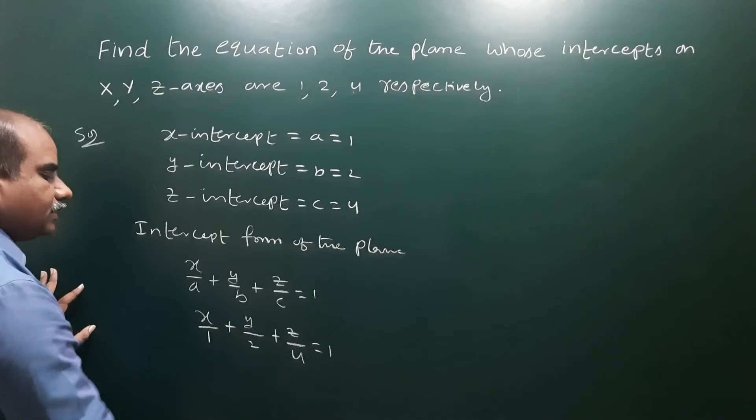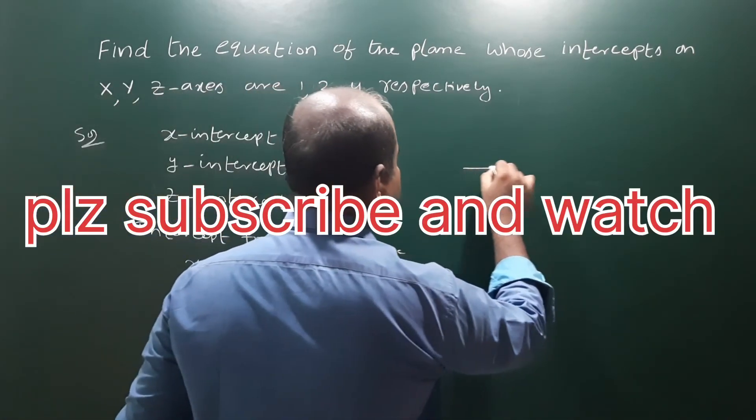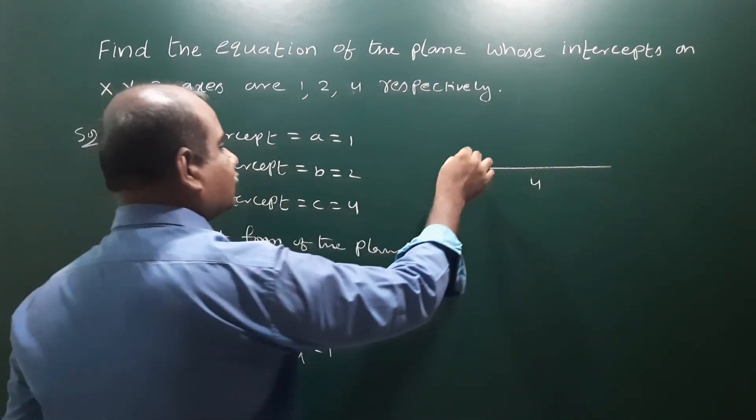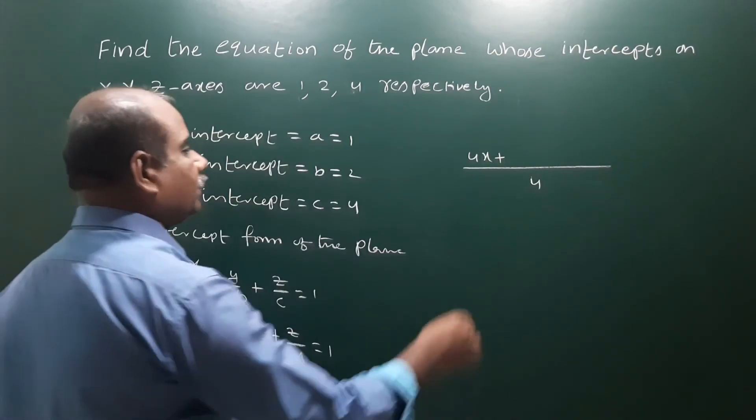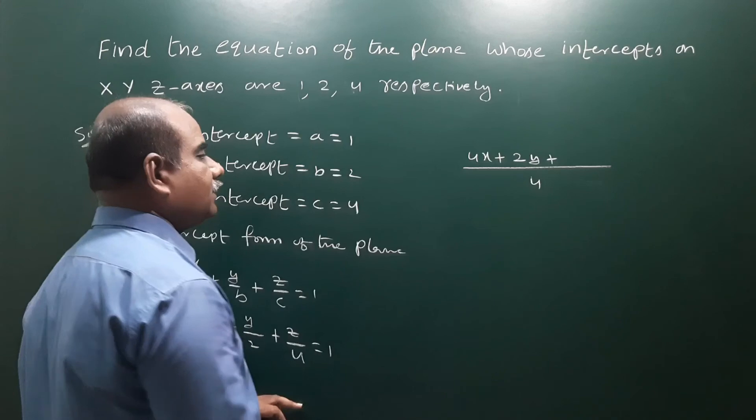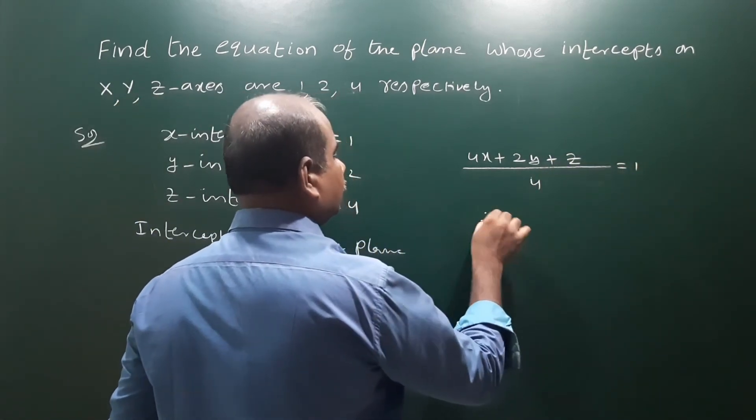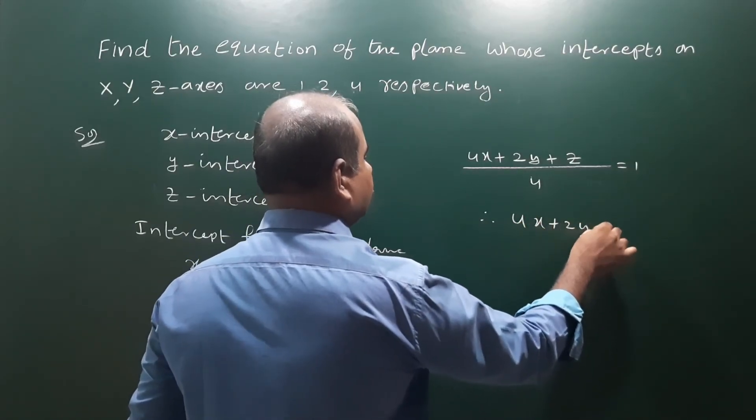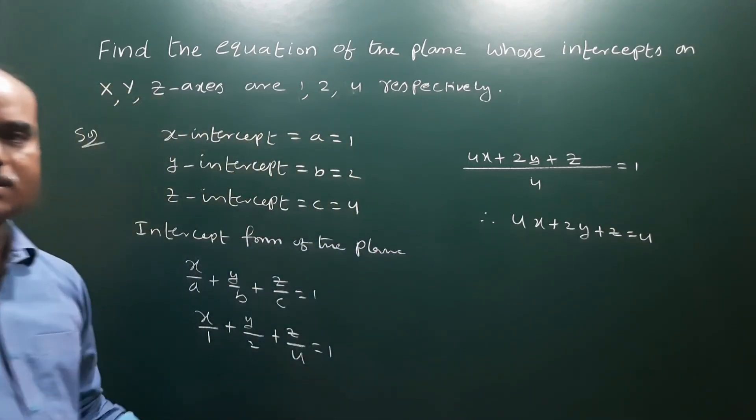Now take the LCM. The LCM is 4. So 4 times x/1 is 4x, 4 divided by 2 times y is 2y, 4 divided by 4 times z is z, that is equal to 1. Therefore, the required plane is 4x plus 2y plus z is equal to 4. That is the required plane.